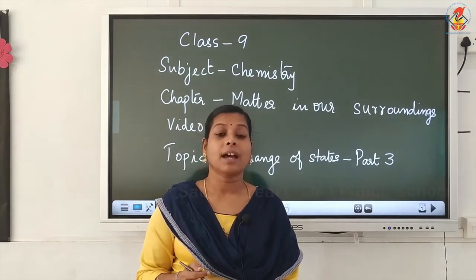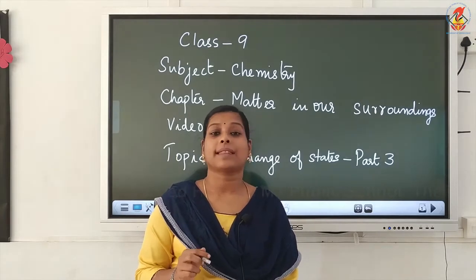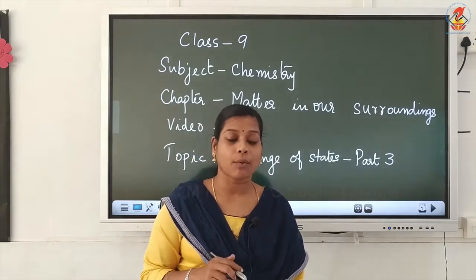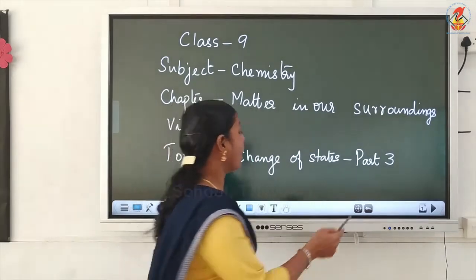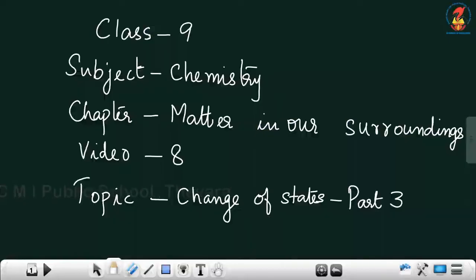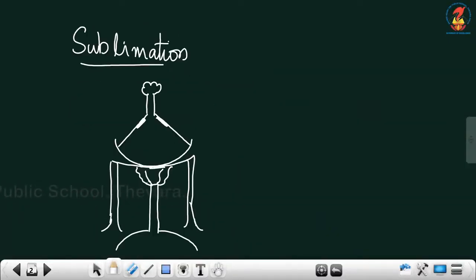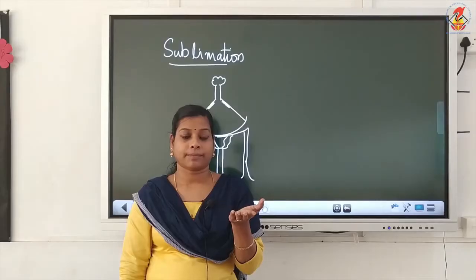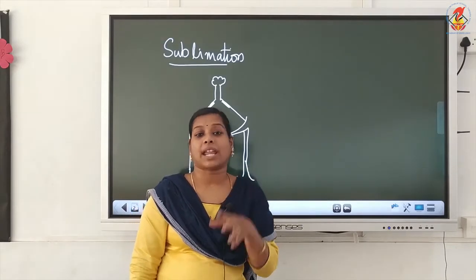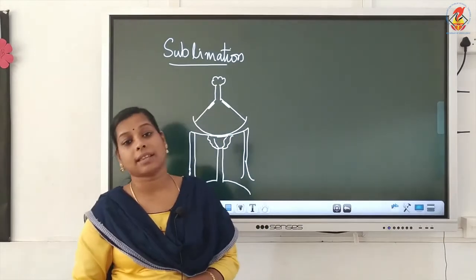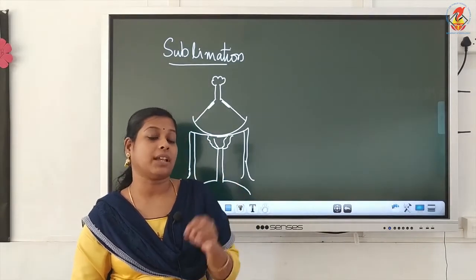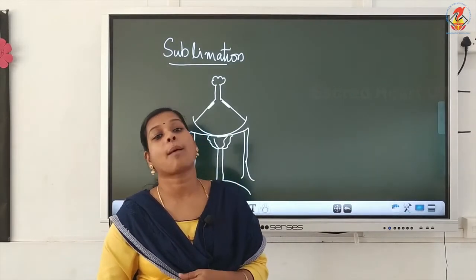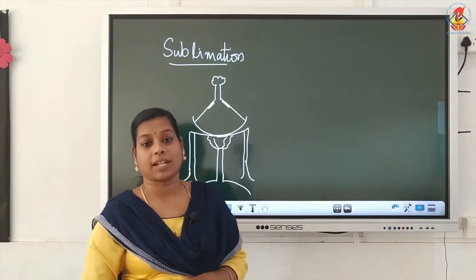You have to study activity 1.13. Now we can see what sublimation is. Moving on to our topic — sublimation. For that we have taken a china dish. In that china dish we have taken either camphor or ammonium chloride. After crushing this camphor or ammonium chloride, we take it in the china dish.